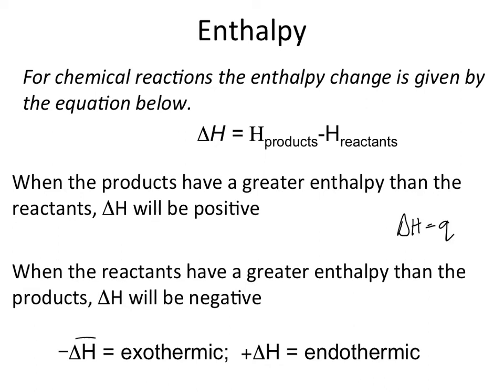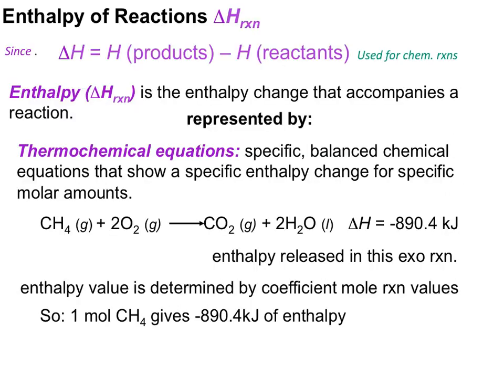A negative delta H gives you an exothermic process; a positive delta H gives you an endothermic process. This brings us to the delta H of the reaction, or delta H_rxn — the enthalpy change that accompanies a specific reaction. These are represented by thermochemical equations: specific balanced chemical equations that show a specific enthalpy change for specific molar amounts.